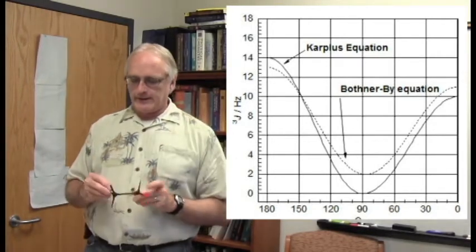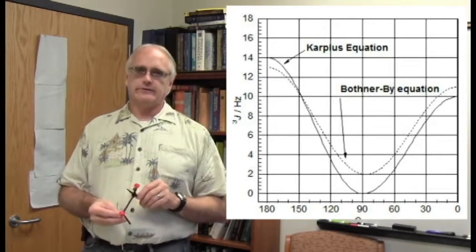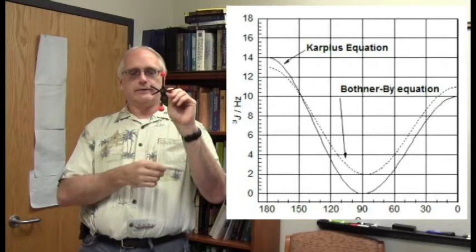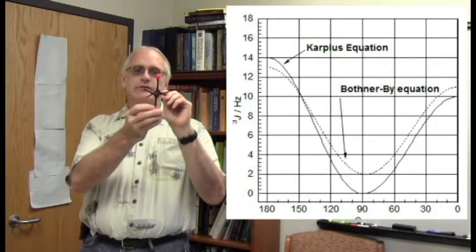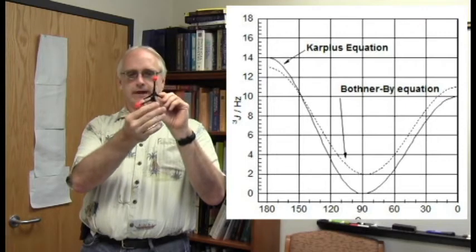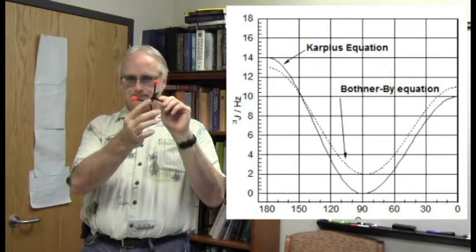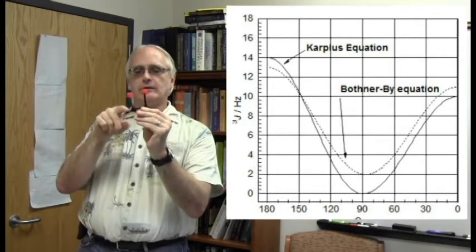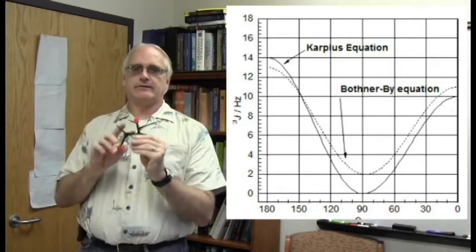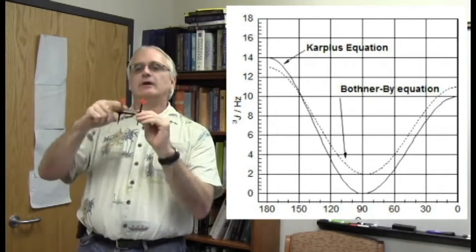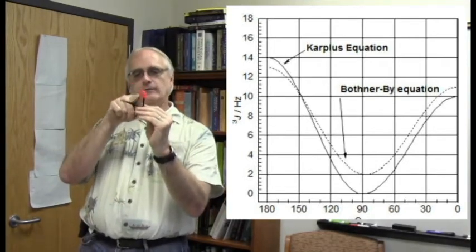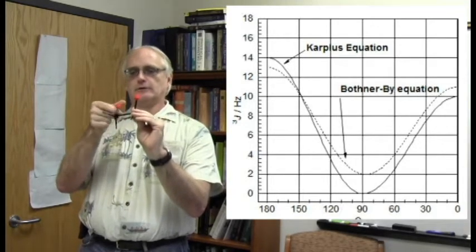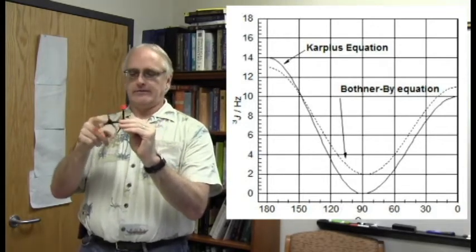And it basically says that the coupling constant is influenced by the size of the dihedral angle. And surprisingly enough, the coupling constants tend to be at their largest values when the dihedral angle is either zero or 180 degrees, and it reaches a minimum value when the dihedral angle is at 90 degrees. And so if you have free rotation about this single bond, the coupling constant that we will measure is really an average of all the possible dihedral angles where the coupling constant would be larger, smaller, larger, smaller, larger, smaller, and constantly changing.